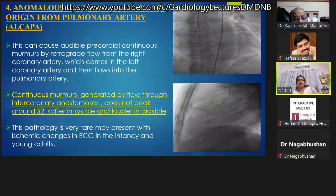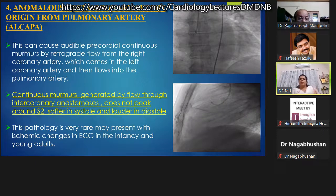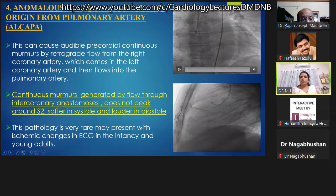Next is ALCAPA — anomalous left coronary artery originating from the main pulmonary artery. This can cause an audible precordial continuous murmur due to retrograde flow from the right coronary artery into the left coronary artery, then into the pulmonary artery. The murmur is generated by flow through intercoronary anastomoses, does not peak around S2, is softer in systole and louder in diastole. This rare pathology may present with ischemic ECG changes in infancy or young adults, or heart failure within the first year of life.